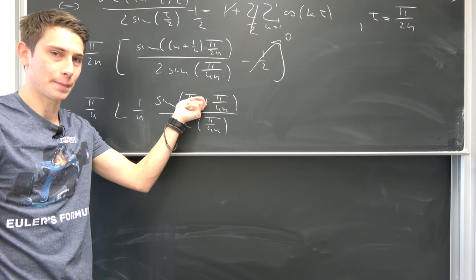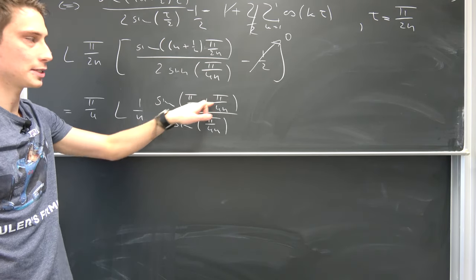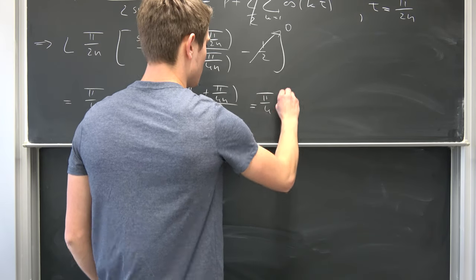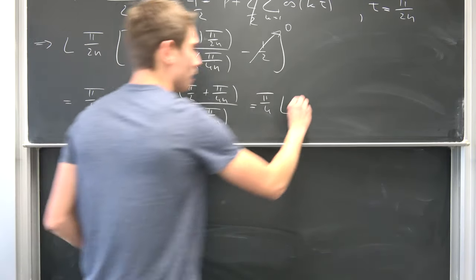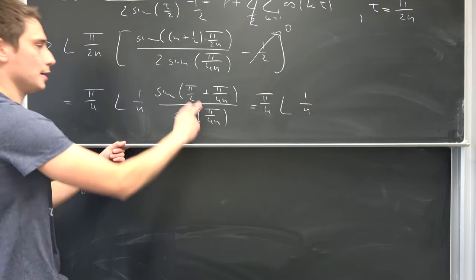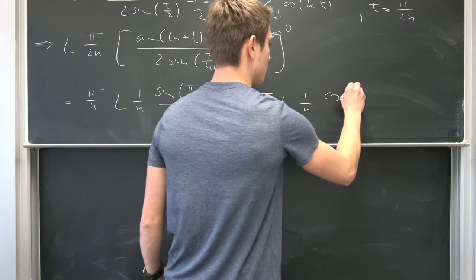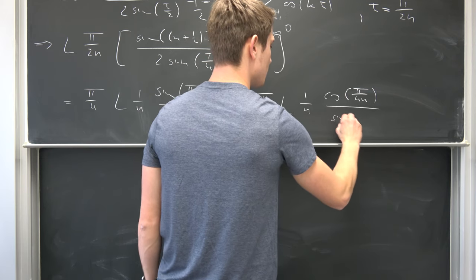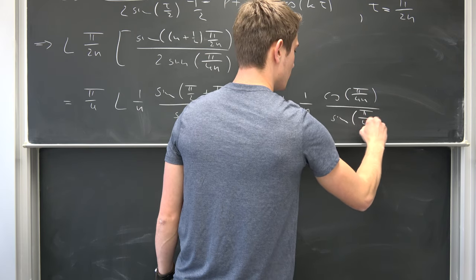A shifted sine wave by pi over 2 is nothing but the cosine of this argument right here. So this is just going to give us pi over 4 times the limit as n approaches infinity of 1 over n, and then we get the cosine of pi over 4 times n over the sine of pi over 4 times n.